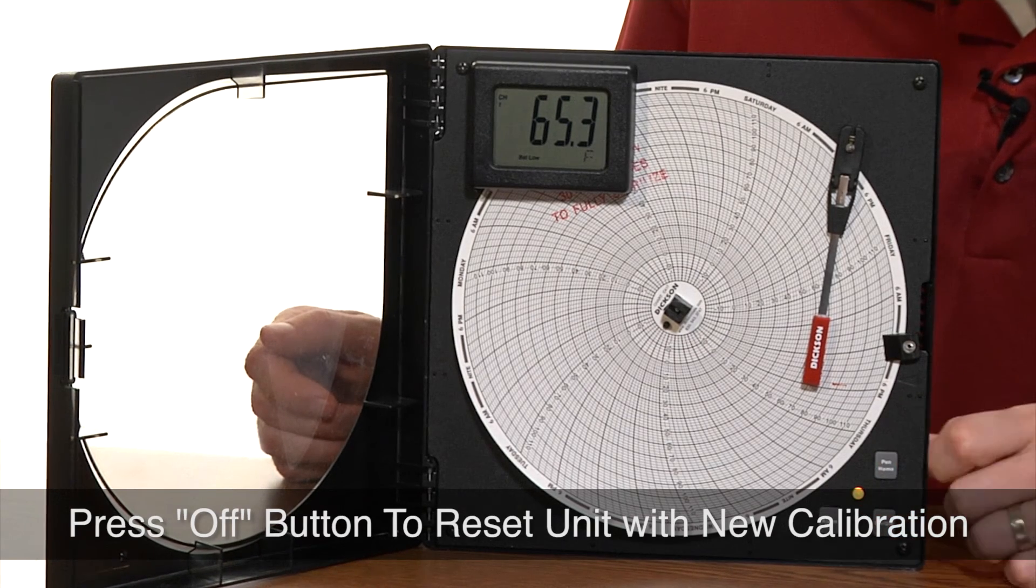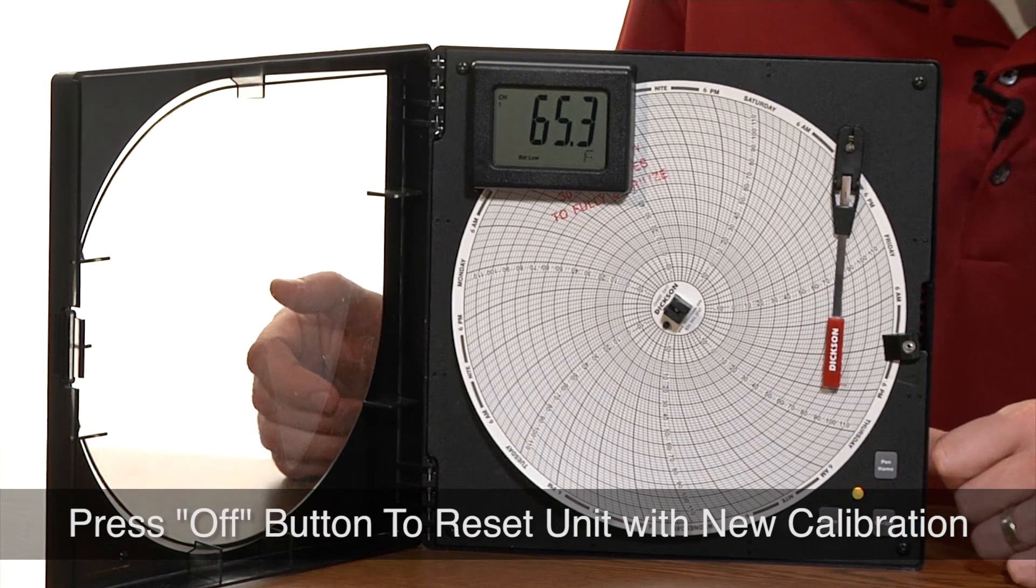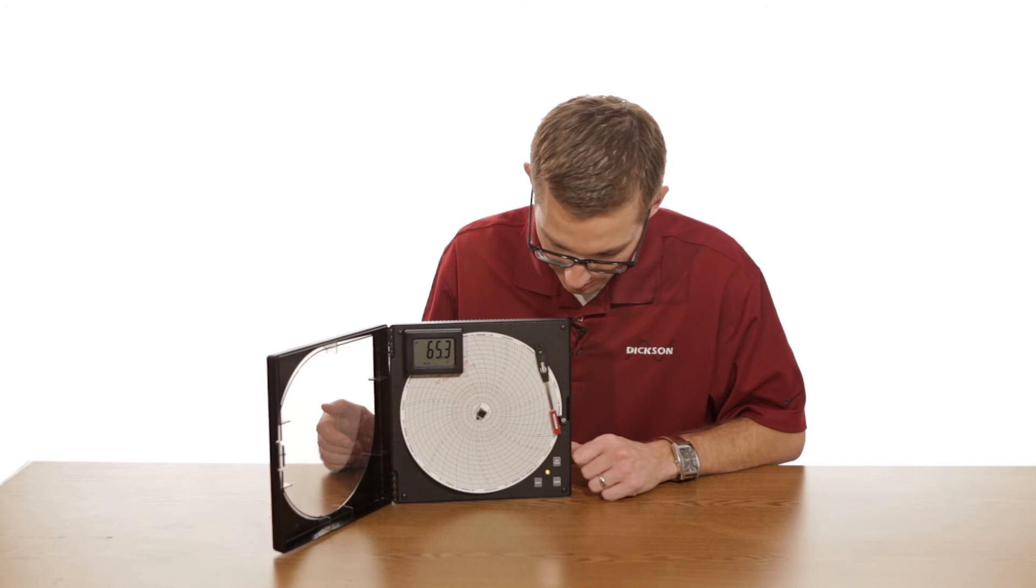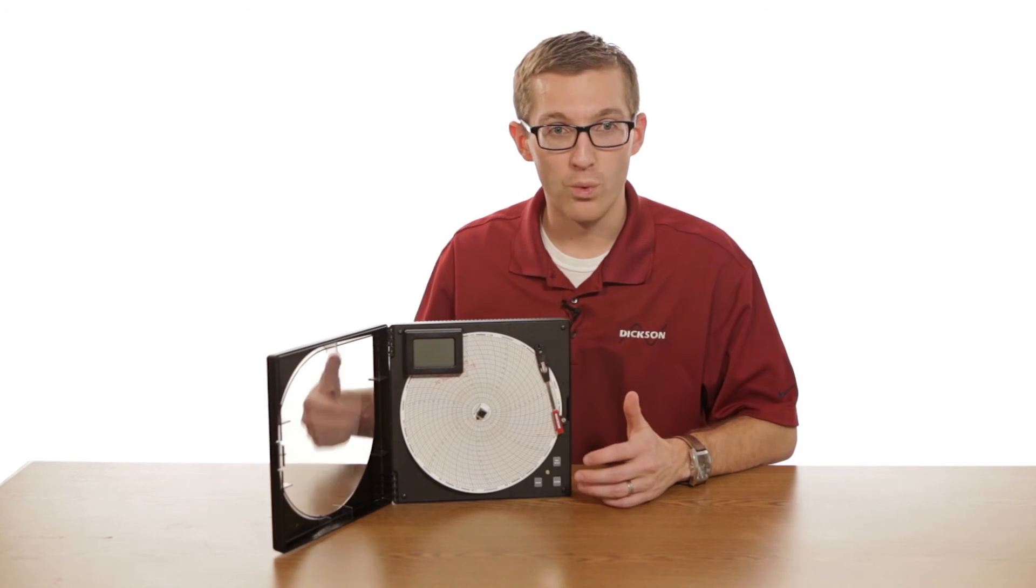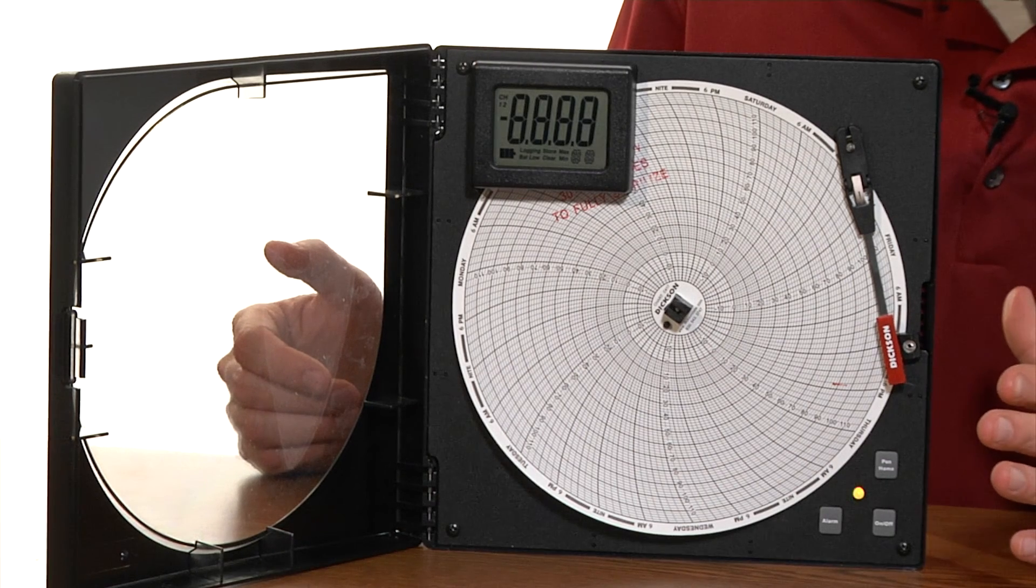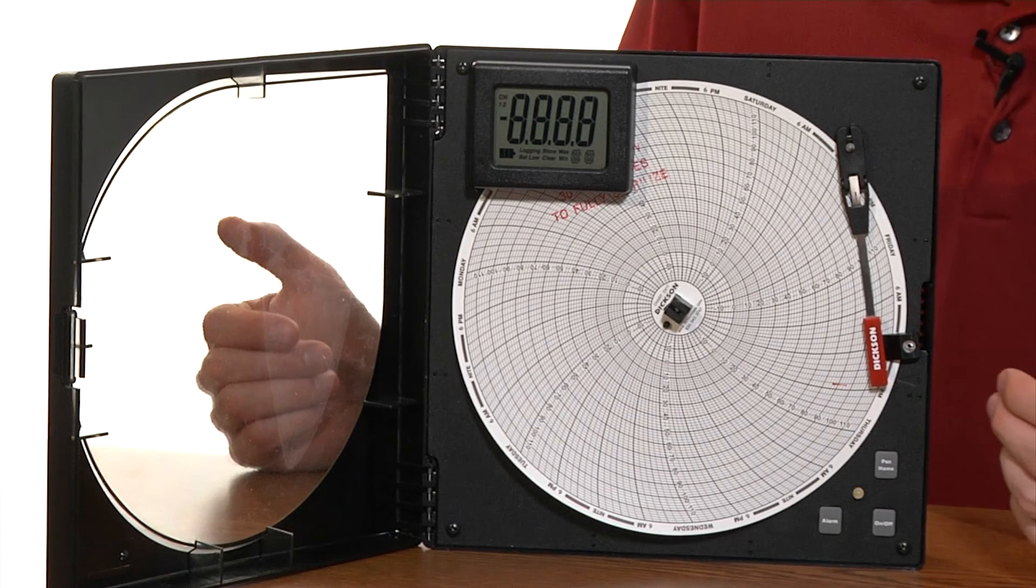...go ahead and press the off button. The unit is going to move all the way to the left and we're out of calibration mode. When you turn the unit back on, just hit the on button and the unit is going to move the pen back to where we calibrated the unit to.